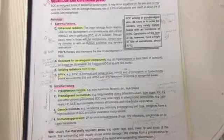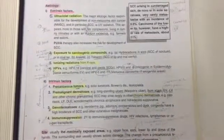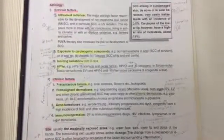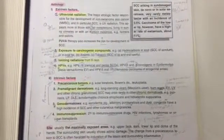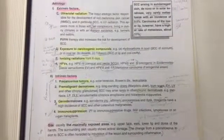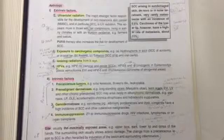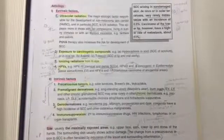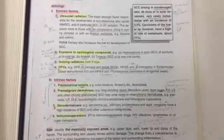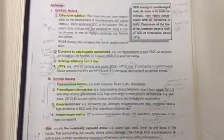Ionizing radiation from X-ray, exposure to carcinogenic compounds like hydrocarbons and soot causing squamous carcinoma of scrotum, or coal tar, arsenic, and tobacco causing squamous cell carcinoma of the lip and oral cavity. HPVs: HPV-16 causes cervical and penile squamous cell carcinoma, HPV-6 and 11 cause verrucous carcinoma of anogenital area, and HPV-5 and 8 are oncogenic in epidermodysplasia verruciformis.